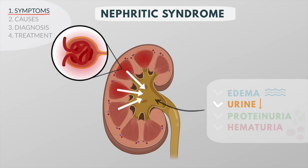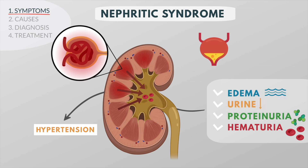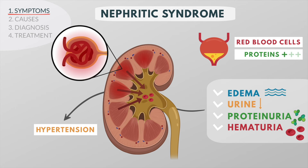The decreased urine output comes from the fact that the kidneys slowly lose their ability to remove waste and fluid from the blood to make urine, which in turn may lead to hypertension. Hematuria is a result of the passage of red blood cells through gaps in the glomerulus. You would expect a urine sediment with red blood cells and proteins, but not to the same level as you would see with nephrotic syndrome.